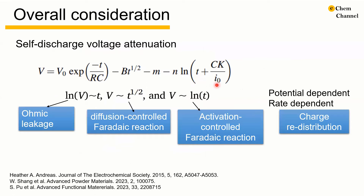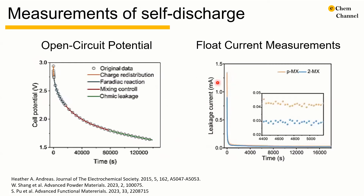Taking all these factors into consideration, the self-discharge process in a real supercapacitor system is often very complicated, combining multiple simultaneous self-discharge reactions, including ohmic leakage, diffusion-controlled Faradaic reactions, activation-controlled Faradaic reactions, and charge redistribution. Plotting the self-discharge profile in different ways may be helpful to identify the different processes. Self-discharge measurement can be conducted as either open-circuit potential or as a float current measurement.